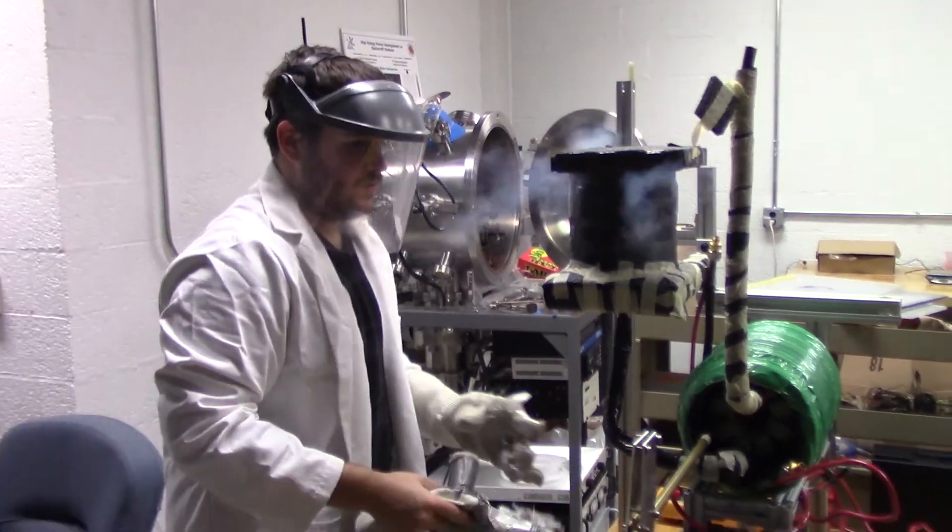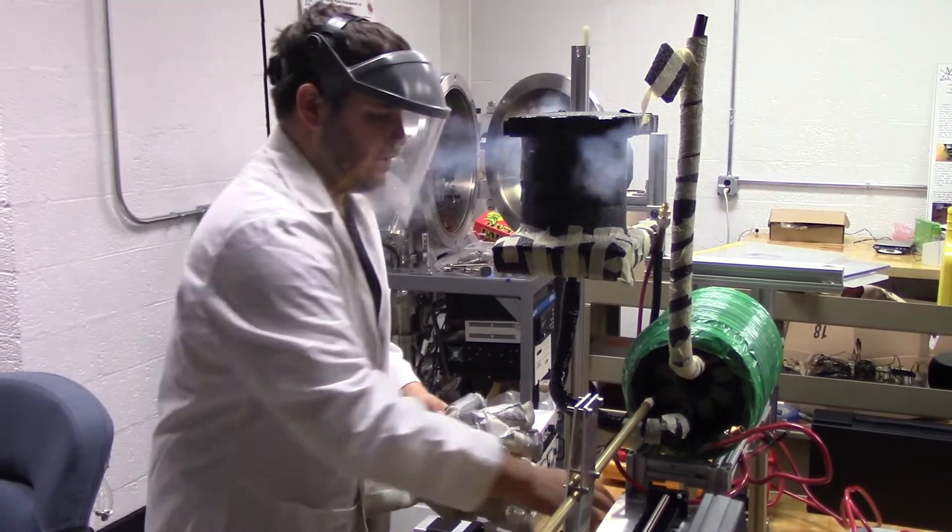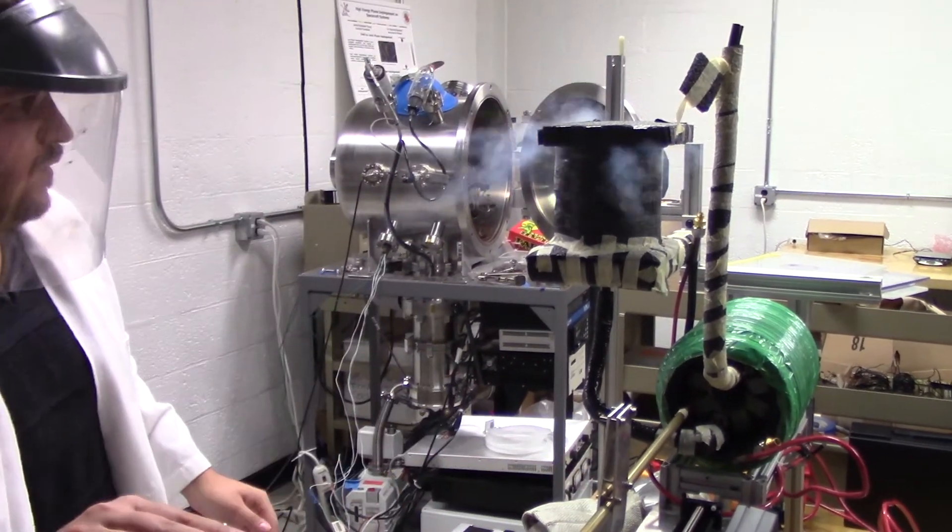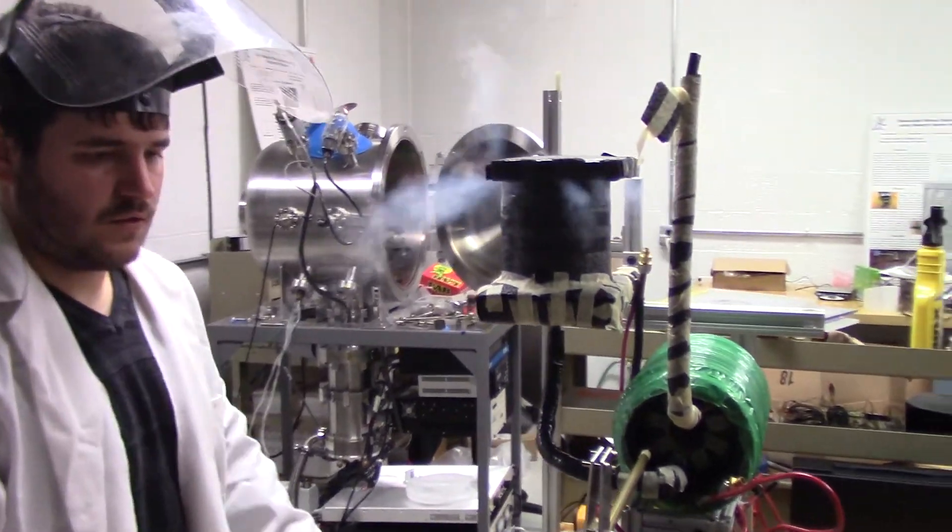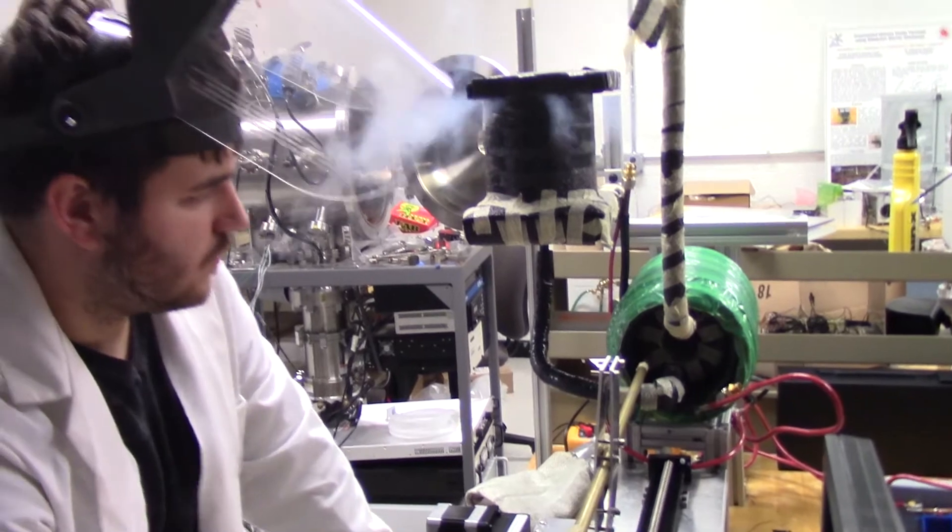We take two tubular superconductors and cool them down to their critical temperature with nitrogen, which is what you see - some of the condensation that's going on around the setup. At that point we can start changing the magnetic field.